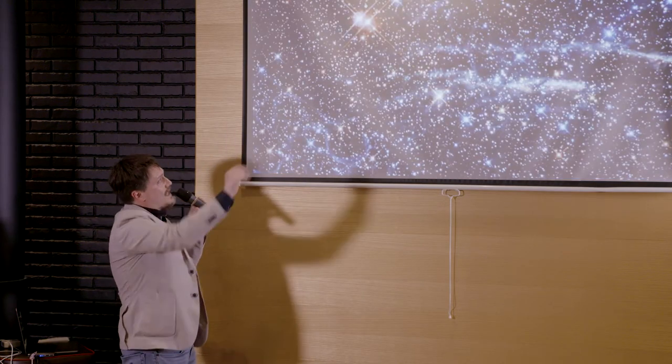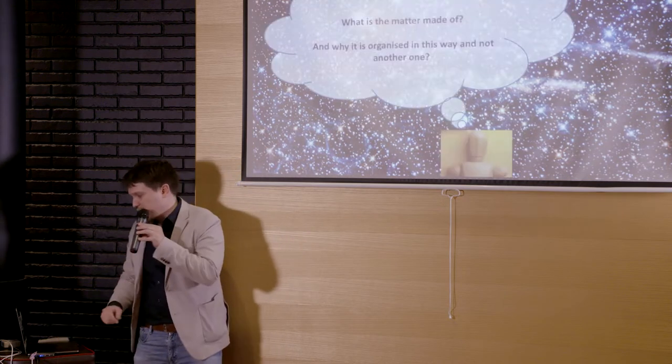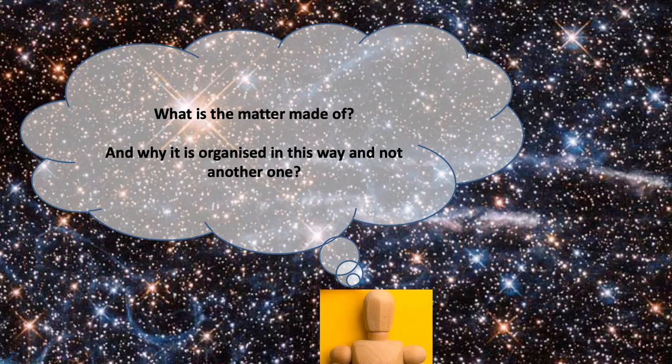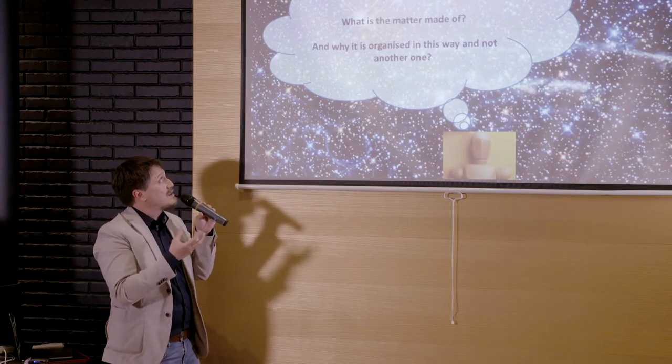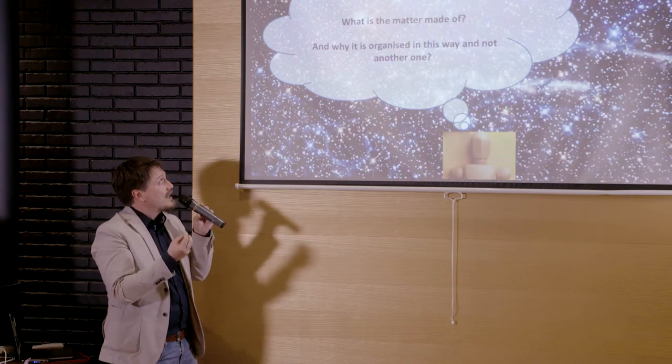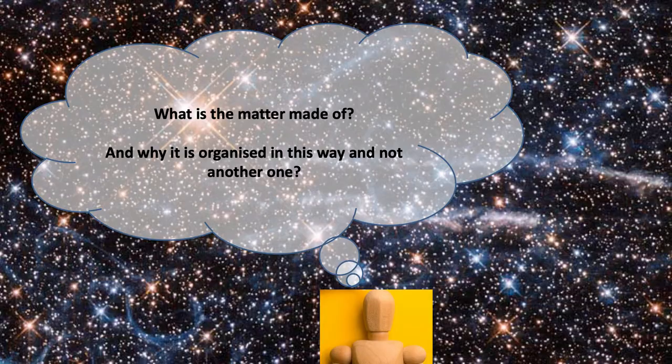Gabrielle spoke of the large scale, but you can also address the question of what we are made of by looking down at the smallest scales. Everything that is bright in this picture is made of something we know quite a lot about — ordinary matter. The primordial questions are: what is matter made of, and why is it organized in this way and not another? These are questions we are still trying to answer today, though we have a good description of some of the effects we see.